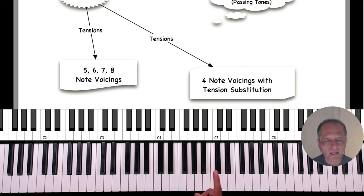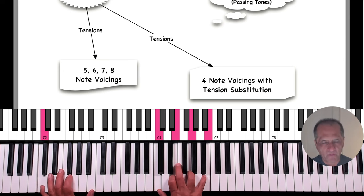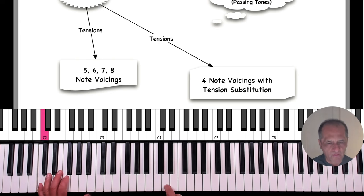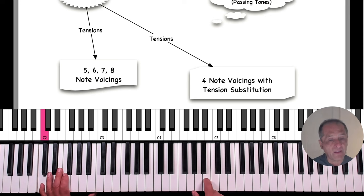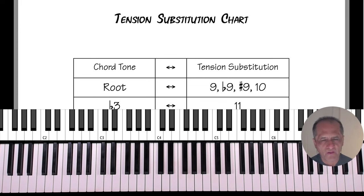The other approach is to keep using four notes — very important. This is a rhythm section system, so we have a bass player. Because we have a bass player providing that extra note, we're able to substitute notes, inclusively the root. Without a bass player we couldn't move our root around — everything collapses. We're going to change a chord tone for a non-chord tone through substitution: we can substitute the root, the three, the five, and even the seven.